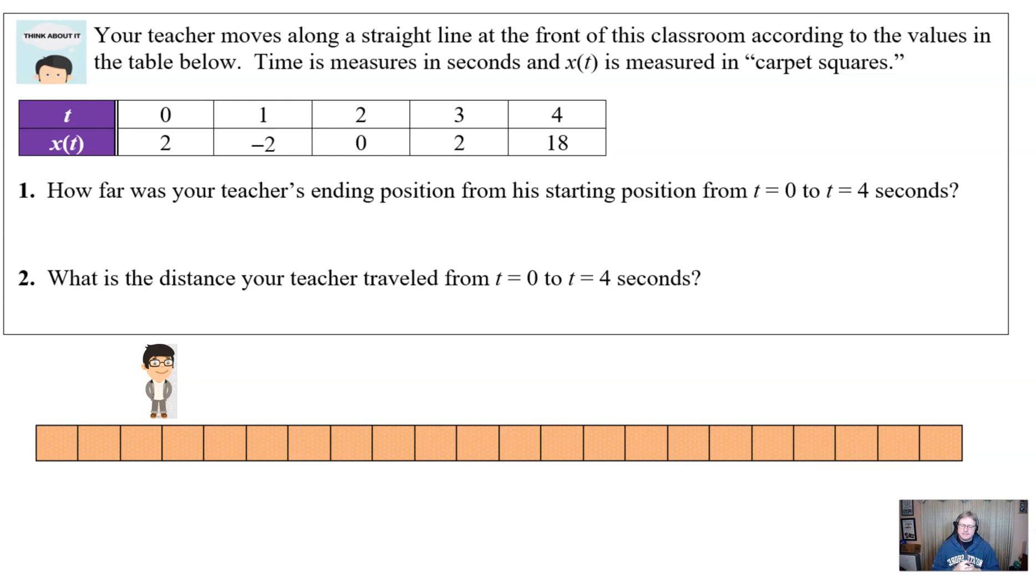But I would tell my students at time zero, I'm going to be at the second carpet square over from the middle of the room. At time one, I will be at the negative two carpet square. That's two left from the middle, and et cetera, et cetera. I will ask students to compute how far was the teacher's ending position from the starting position from time zero to time four. And then I would ask the students what was the total distance that the teacher traveled. So lots of really cool things happening.